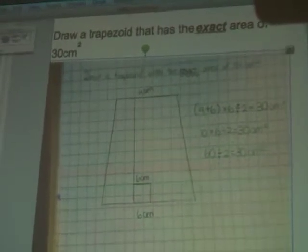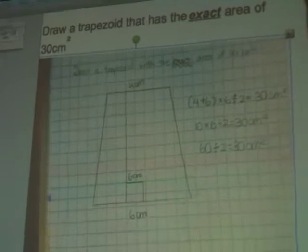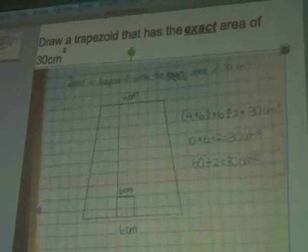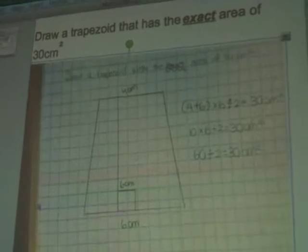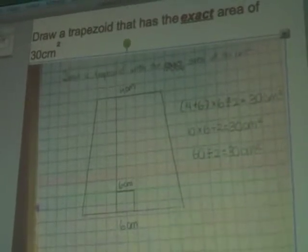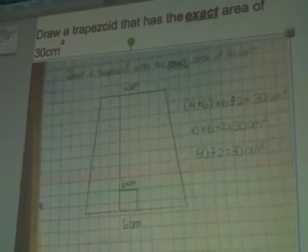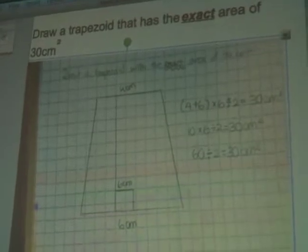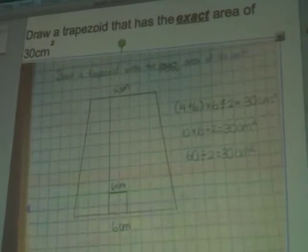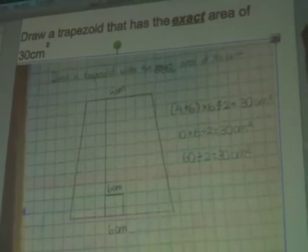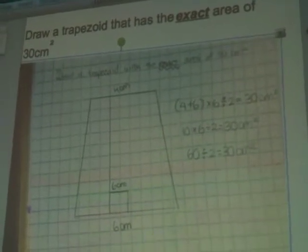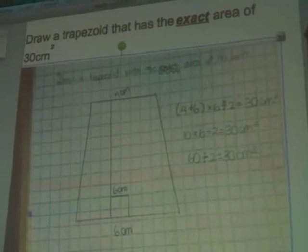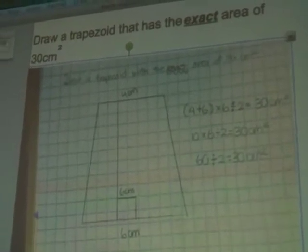First I doubled the area which equals 60. Then I divided it by 10, so the top side and the bottom side would equal to 10 cm. And the height, I made it 6 because 6 times 10 equals to 60.